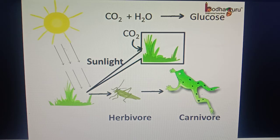The plants absorb the nutrients like calcium, iron, nitrogen etc. from the soil, which goes into all the animals which eat them directly or indirectly.